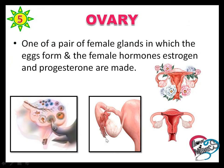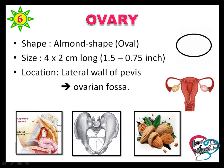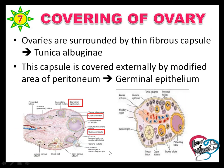The ovary is one pair of female glands in which the eggs are formed and female hormones like estrogen and progesterone are synthesized. The shape of ovaries is almond shape, that is oval shape, and the size is 4 x 2 cm, which means 1.5 to 0.75 inches. The location of the ovary is the lateral wall of the pelvis, that is the ovarian fossa. The ovaries are surrounded by a thin fibrous capsule called tunica albuginea, which is covered externally by modified peritoneum, that is the germinal epithelium.